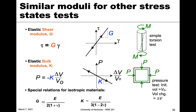An important point is that there are special relations between these moduli for isotropic materials — where 'iso' means same and 'tropic' refers to properties, so properties are the same in all directions. When that is the case, we can define the shear modulus or bulk modulus from the elastic modulus alone. That's why the tension test is so central: if the material is uniform in all directions, we don't need to perform a shear or hydrostatic test to obtain those other moduli.